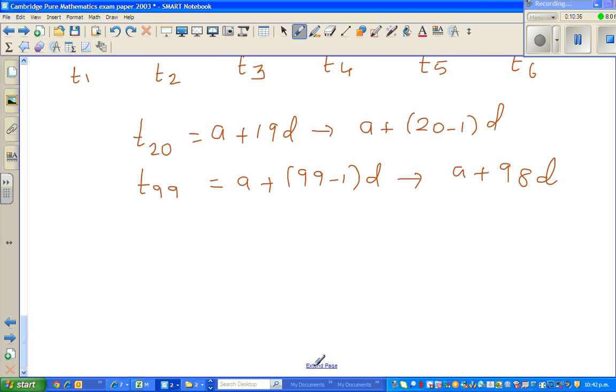So generally, if you want to write it in a general form, we write tn, whatever that n is, would be the first term a plus 1 less than this times d, n minus 1 times d. And that's how mathematicians have proved this formula. That is, the nth term of an arithmetic progression has this formula of a plus n minus 1 times d. I will prove the sn formula in the next video.